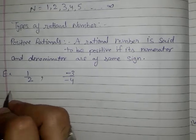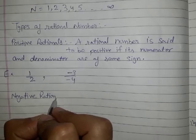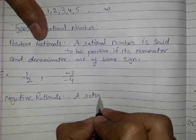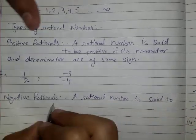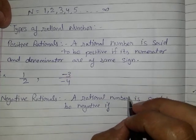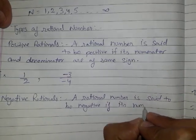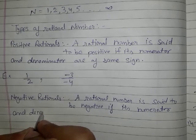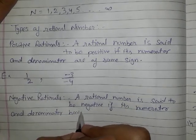Next is negative rational number. A rational number is said to be negative if its numerator and denominator have opposite signs.